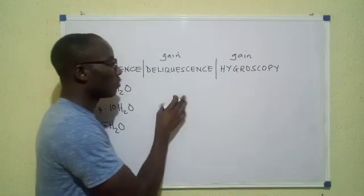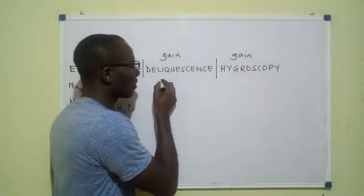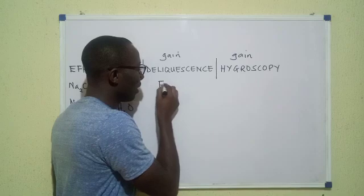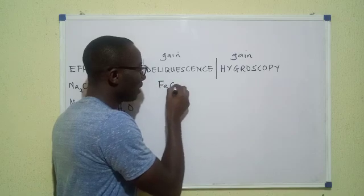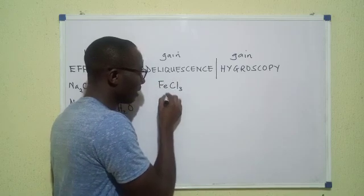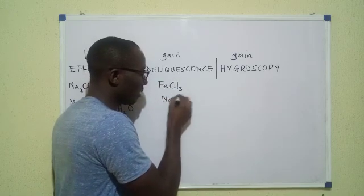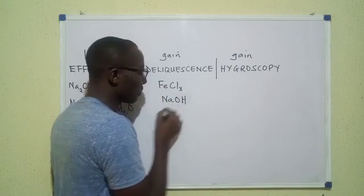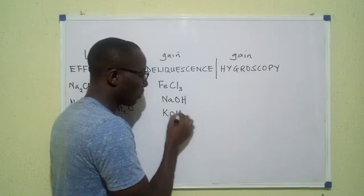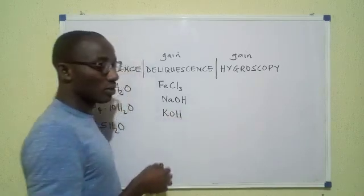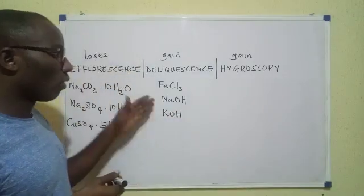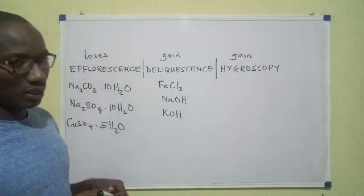For the deliquescent ones, we have things like iron(III) chloride, which is deliquescent. Sodium hydroxide is deliquescent. Potassium hydroxide — the caustics — caustic soda and caustic potash — they are all deliquescent.